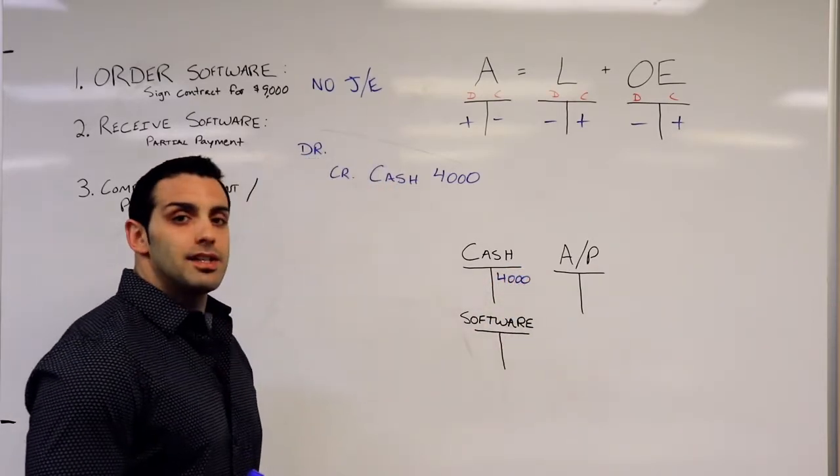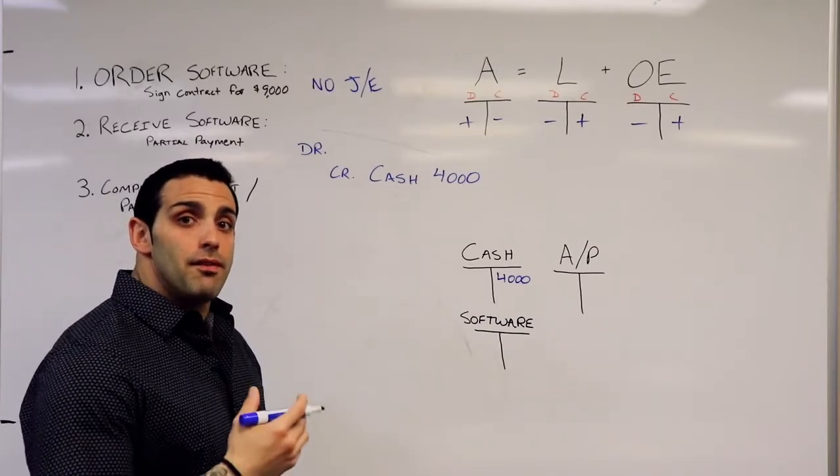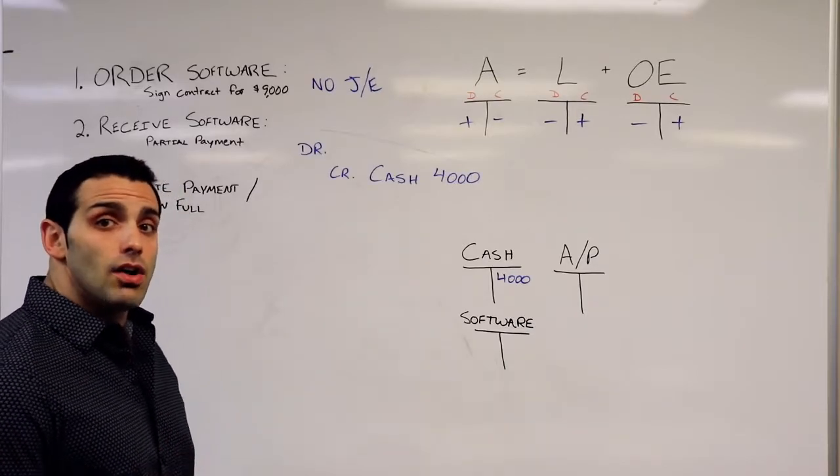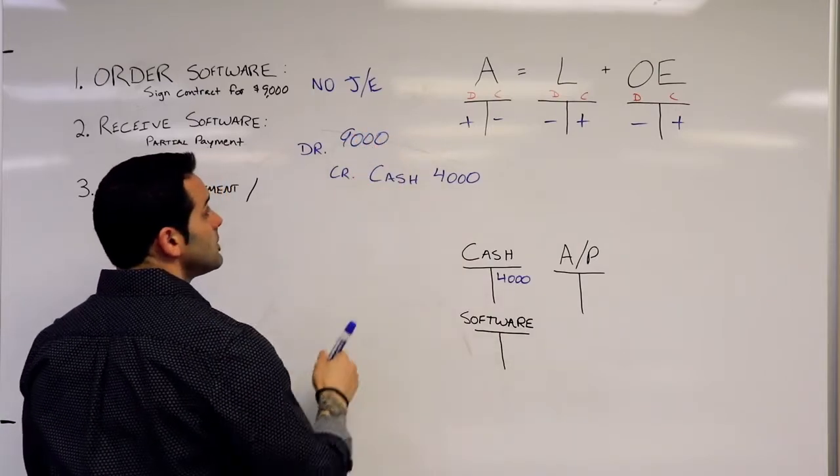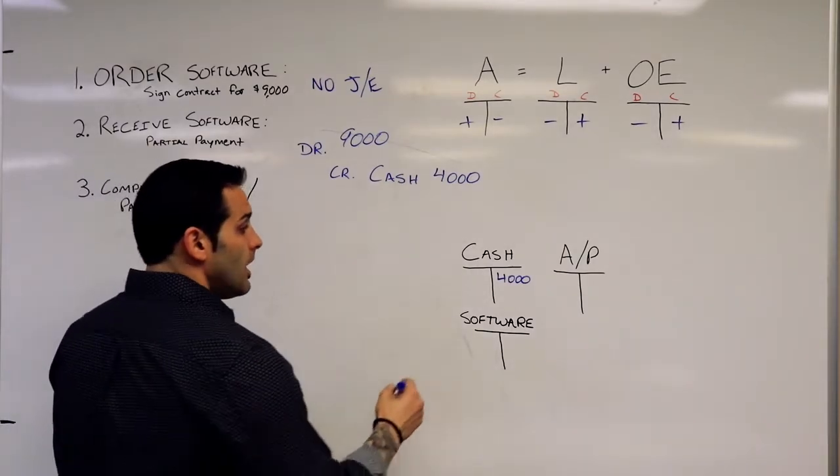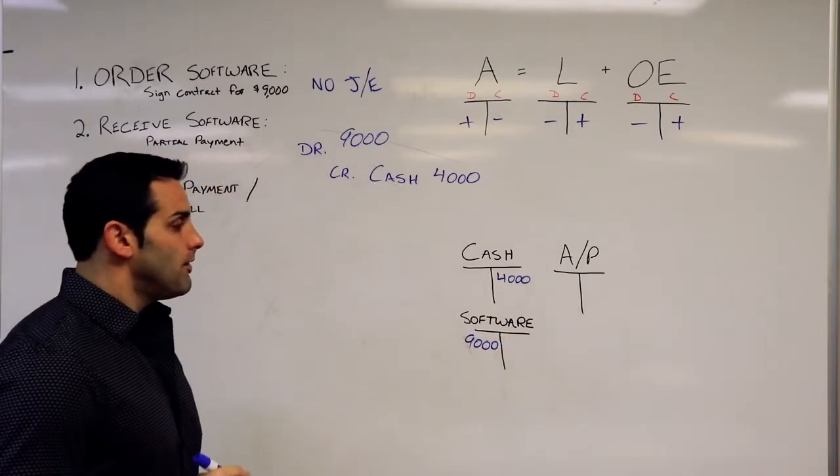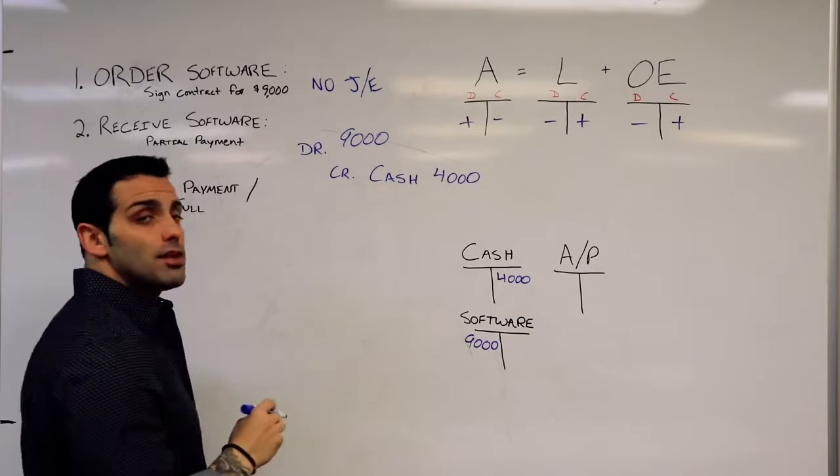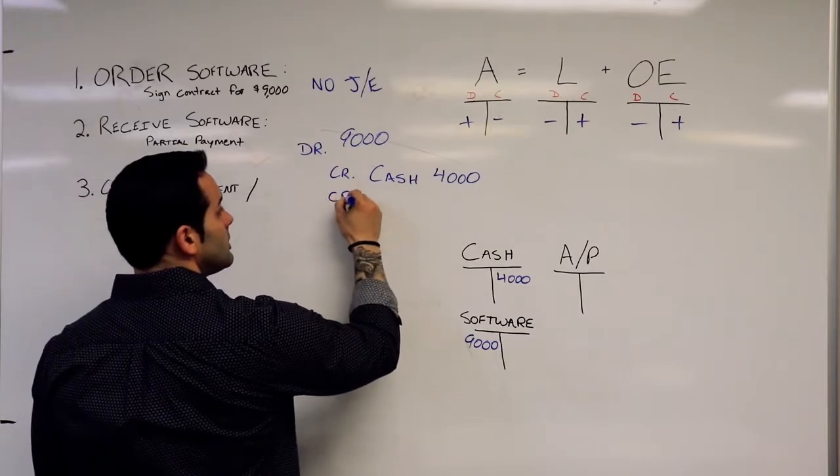What else do I know? I know that I received the full $9,000 in software for that mobile app. Software is also an asset, so I received the full $9,000. Because increases in assets are done with a debit, I'm also going to put that on the debit column of my software T-account. Now right now these do not balance. I have $9,000 in debits and $4,000 in credits, so I need more credits to make this balance.